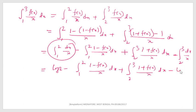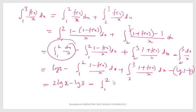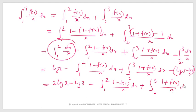This is equal to log 3 minus log 2. So combining, we get 2 log 2 minus log 3, minus the integral from 1 to 2 of (1 - f(x))/x dx plus the integral from 2 to 3 of (1 + f(x))/x dx. Therefore the integral from 1 to 3 of f(x)/x dx equals this expression.